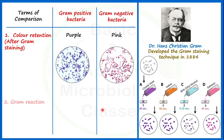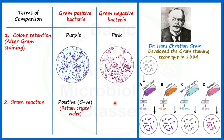Gram reaction is based on the principle of retainment of the primary stain, that is crystal violet. The gram reaction is positive for gram positive bacteria because they are able to retain the crystal violet. For gram negative bacteria, the gram reaction is negative because they are not able to retain crystal violet after addition of the decolorizer, but they take the color of the counter stain.